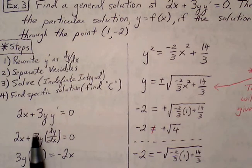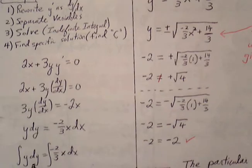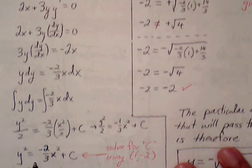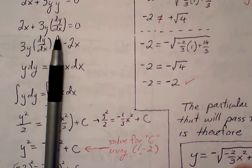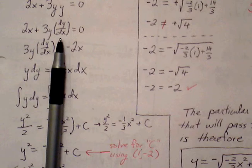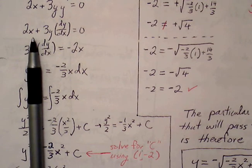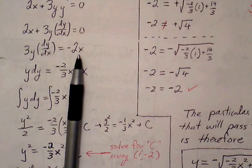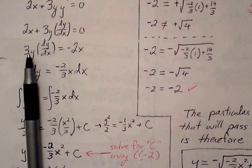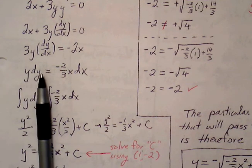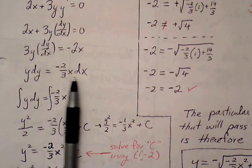So, 2x plus 3y, y prime equals 0. We're going to rewrite y prime as dy over dx, then separate the variables. Let's have the y's on the left — we'll start by moving the 2x to the right side of the equation. I'm also going to divide both sides by 3. So, y dy is equal to negative 2/3 x dx.